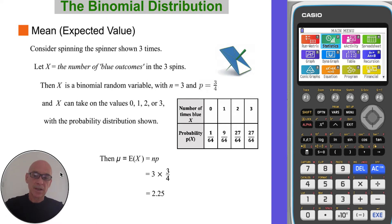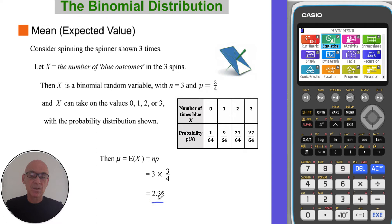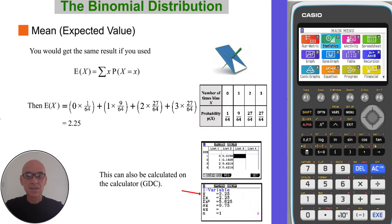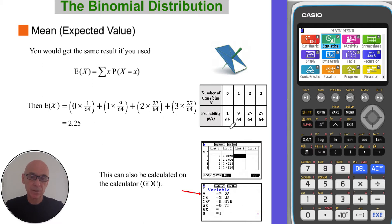So we can calculate the mean, or the expected value, simply by multiplying n, the number of trials, by p, the probability of success, and the result is equal to 2.25. That's the same result you would have got if you used the formula for any probability distribution — the sum of x times P(x). You can see the calculations here taken from the distribution, and that also gives, of course, the same value of 2.25.